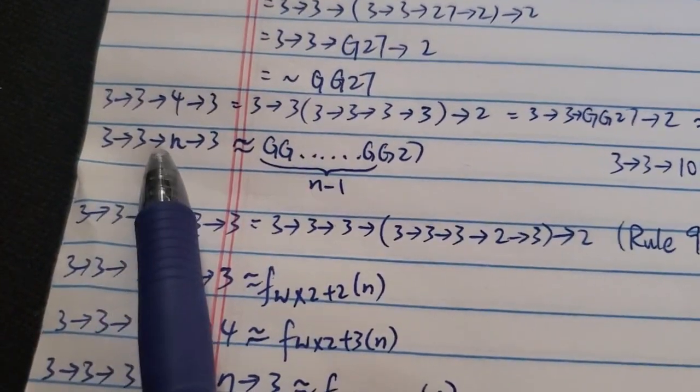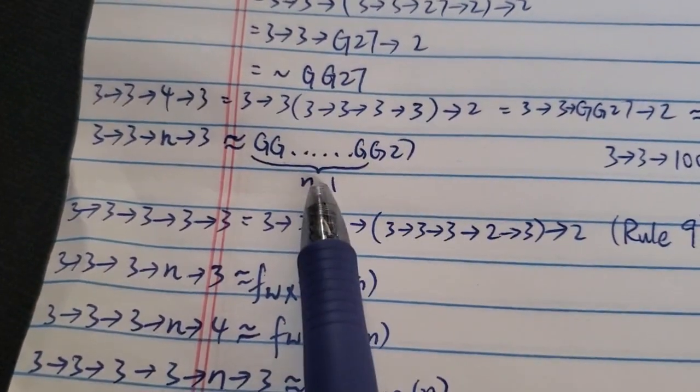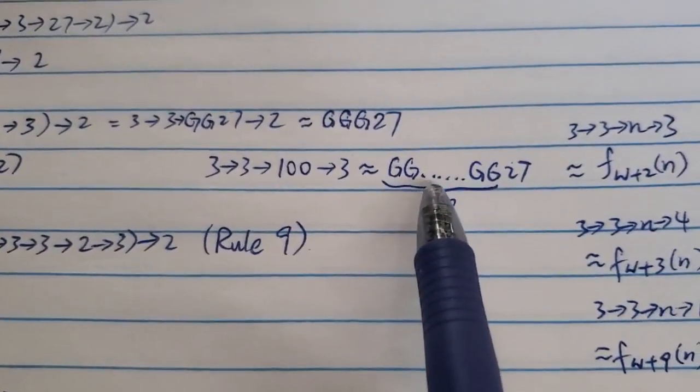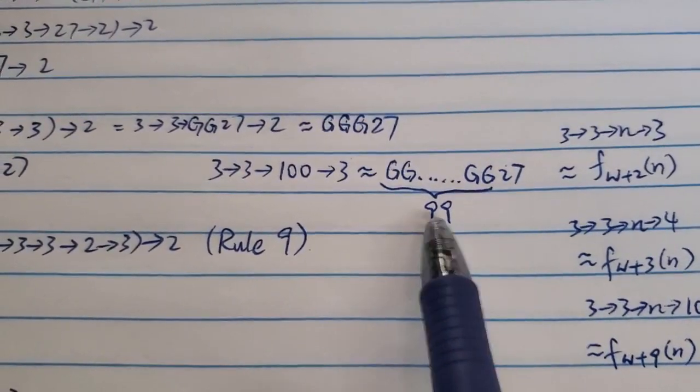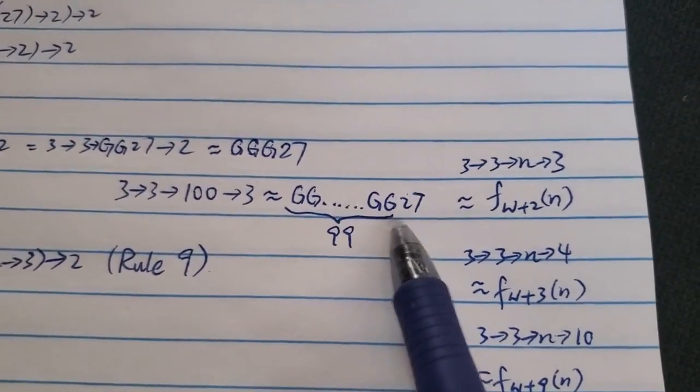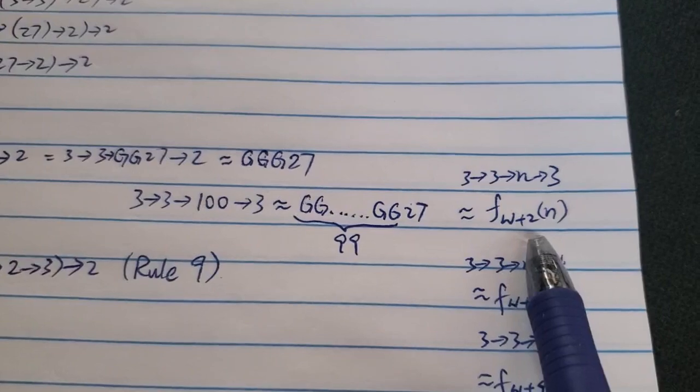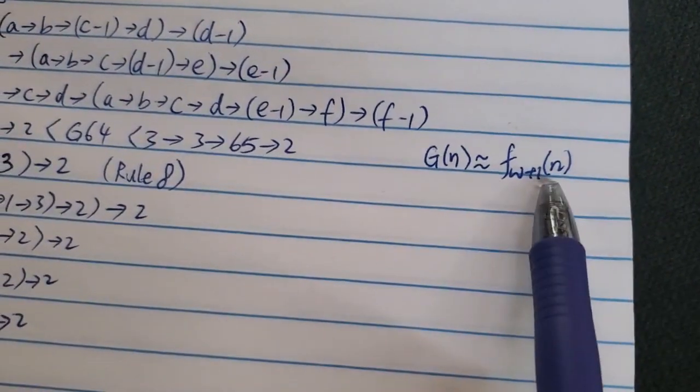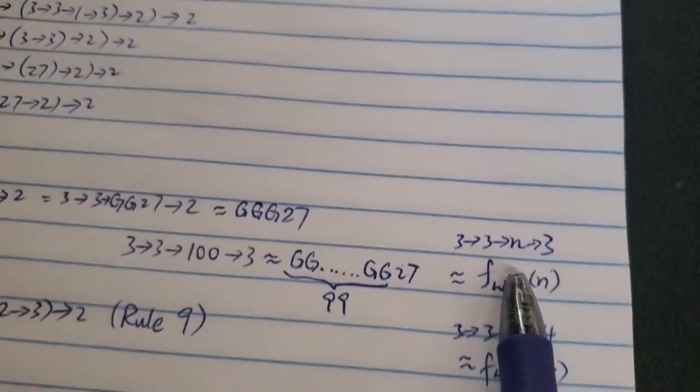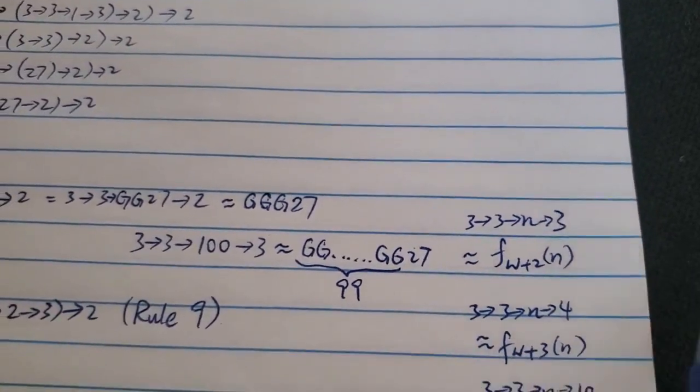And for the general rule, 3→3→N→3 is somewhere around this thing over here. So with G, G, G, G, G, G, G27 with N-1 number of Gs. So imagine if N is 100. So 3→3→100→3 is somewhere around G, G, G, G, G, G27 with 99 Gs. However, as big as it is, it seems, so 3→3→N→3, the growth rate is somewhere around f_ω+2(N). And we know that Graham's sequence, the G sequence is around f_ω+1(N). And actually slightly slower than this. But just something this crazy is just add 1 to the fast-growing hierarchy.